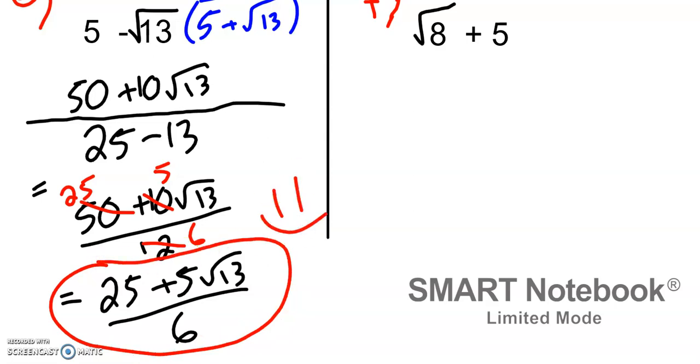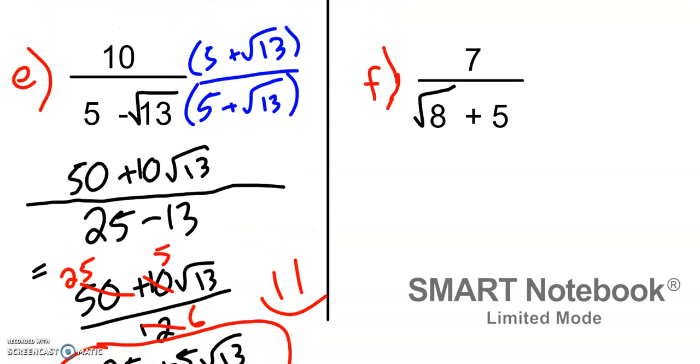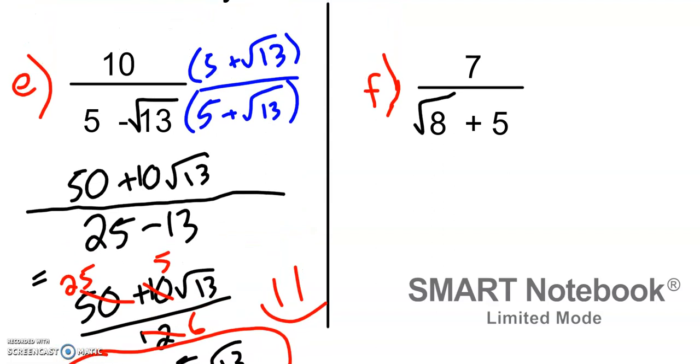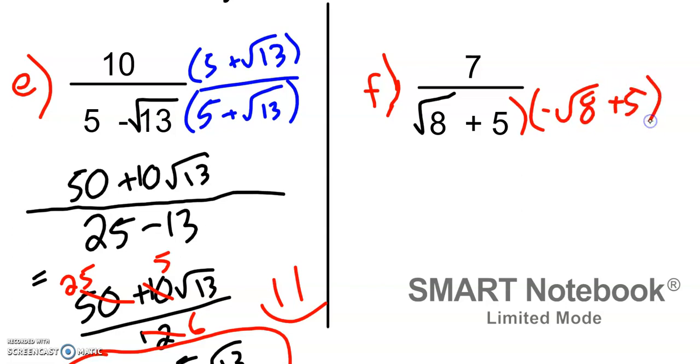For the last problem, when we multiply it's going to be negative root 8 plus 5 — but we're out of time. Bye.